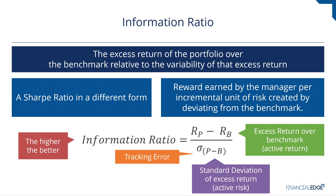Just like other ratios, the higher the information ratio the better. If the information ratio is less than zero, it means the active manager failed on the first objective of outperforming the benchmark.